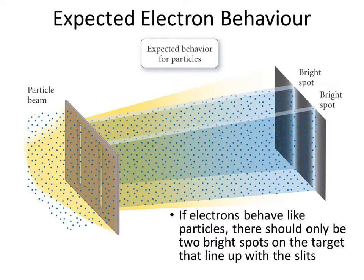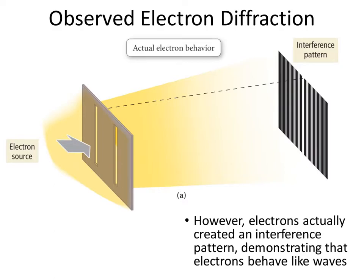The same experiment was set up — in this case, there was a source of electrons going through a double slit. Again, what was expected was that you would have two bright spots in line with the slits. However, just like with light, what was seen was an interference pattern on the board in the back, meaning that these electrons are actually interfering with one another and creating this characterized interference pattern as we saw with light.